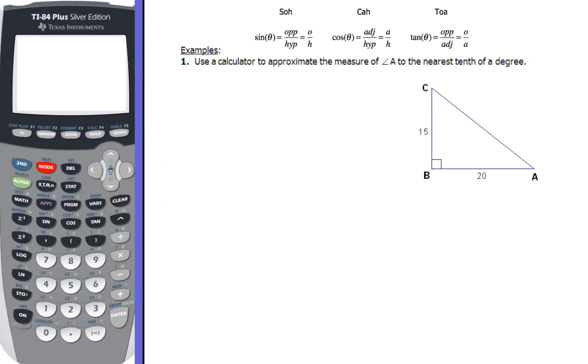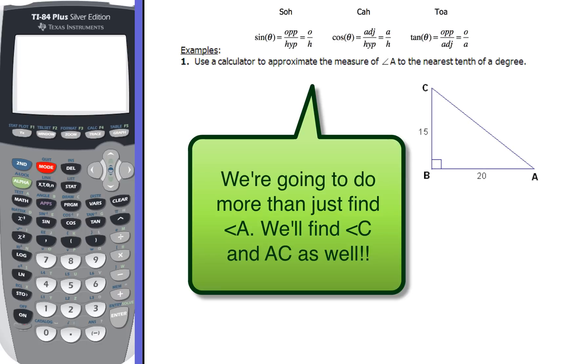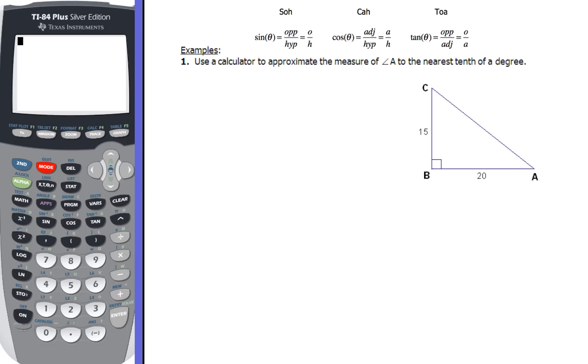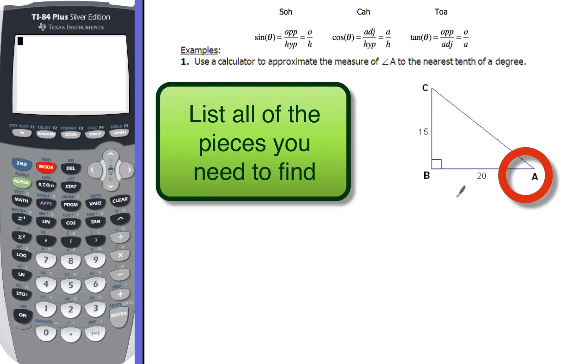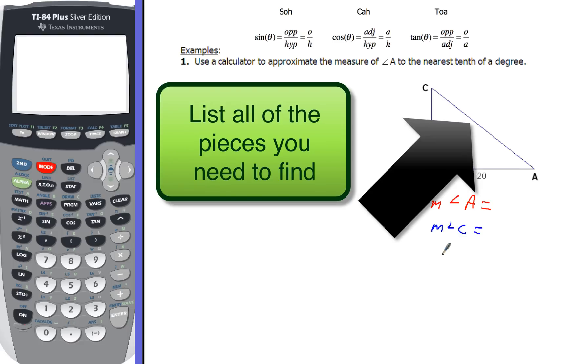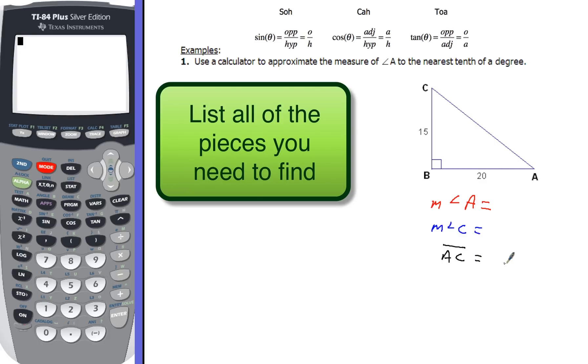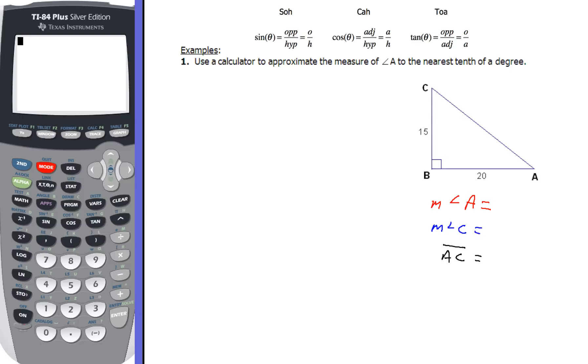To go ahead and work with this problem, we're going to take a look at using a calculator to approximate the measure of angle A to the nearest tenth of a degree. So I can see that I've got side CB, and I have side BA. I don't have anything else. So what I'm going to do is actually list the pieces that I have to find. I've got to find angle A, I've got to find angle C, and I also have to find the length of side AC.